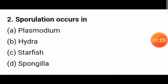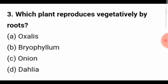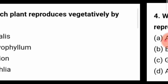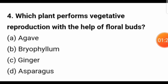Sporulation occurs in plasmodium. Which plant reproduces vegetatively by roots? The answer is dahlia. Which plant performs vegetative reproduction with the help of floral buds? Of course, it is agave.